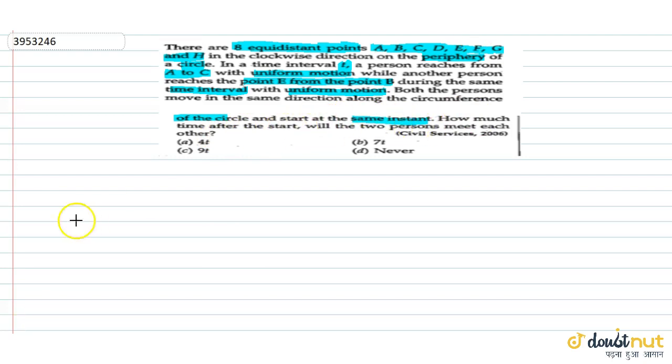Ab agar ham dekhi, ya haan pe, ya maari paas ek circle hai. Ya haan pe points hain A, B, C, D, E, F, G and H. Total kitnay points hoogai? 8. Toh ye 8 points mein se C ke liye kitna distance huwa? Total 2 times.